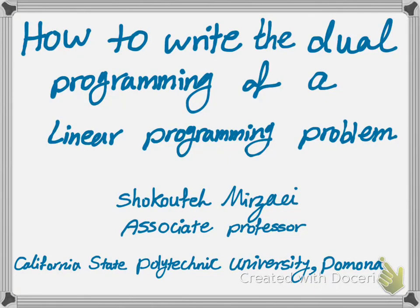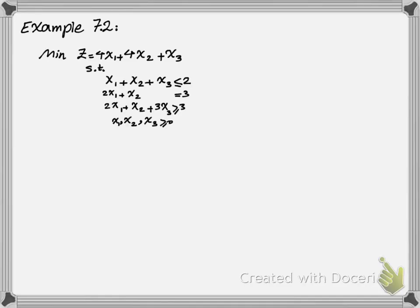Hello, everyone. This is Mirzai from Cal Poly Pomona, and in this lesson we're going to look into another example of writing the dual programming of a linear programming problem. This time we're going to look at example 7.2 of your textbook. As you learned earlier, we can write the dual programming of a linear programming problem in two ways: either we normalize it and then write the dual of the normalized problem, or we skip the normalization step and write the dual programming directly. You can choose either method, but I'm going to show both ways here.